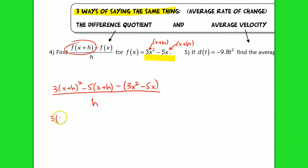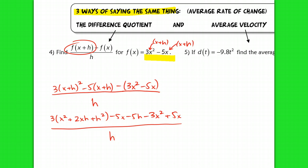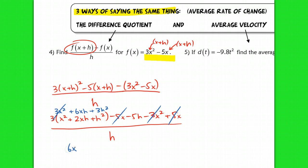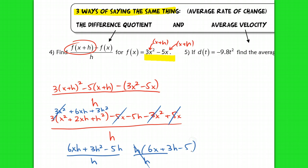So in the numerator I have 3(x² + 2xh + h²) − 5x − 5h − (3x² − 5x), all over h. Expanding: 3x² + 6xh + 3h² − 5x − 5h − 3x² + 5x, all over h. The 3x² terms cancel, and the −5x and +5x cancel, leaving 6xh + 3h² − 5h over h. Factoring out h in the numerator and canceling with the denominator, I'm left with 6x + 3h − 5. That is the difference quotient for f(x) = 3x² − 5x.